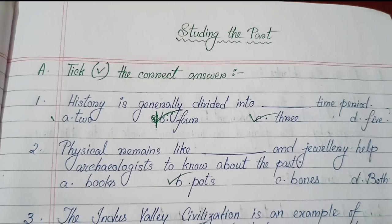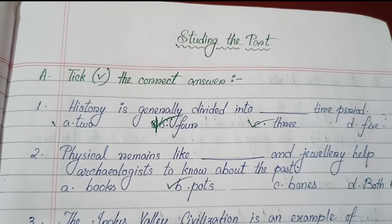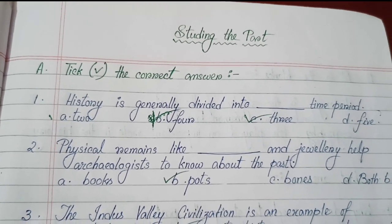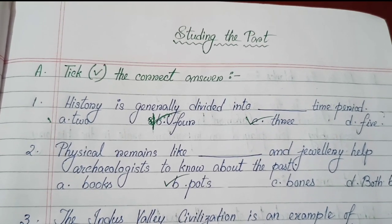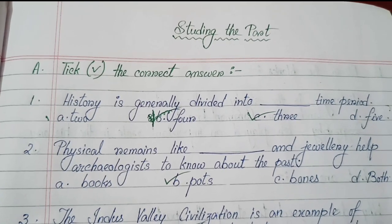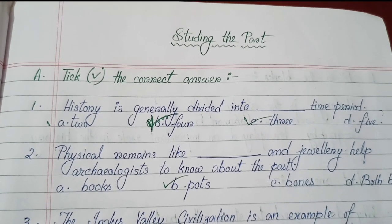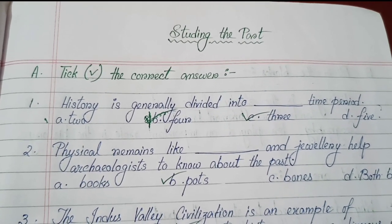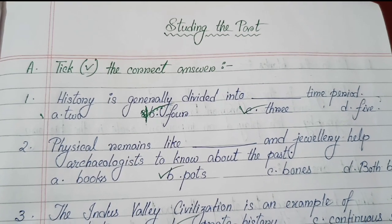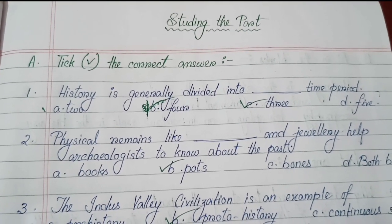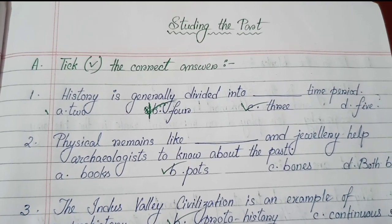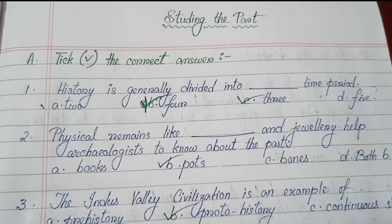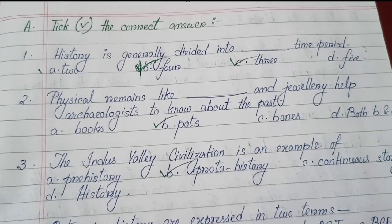Let's start the first chapter from Class 6 History CBSE Board — 'Studying the Past'. Section A: Tick the correct answer. Number one: History is generally divided into — options are two, four, three, and five — answer is three time periods.